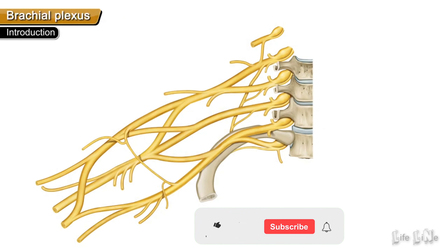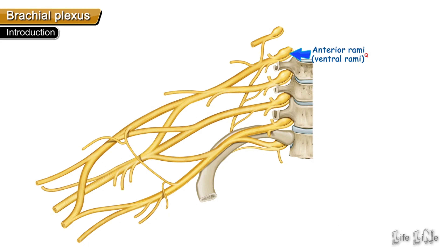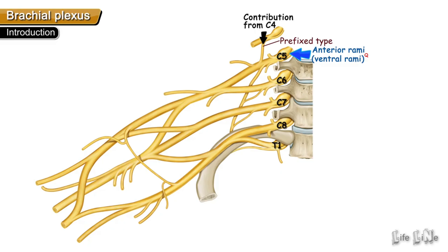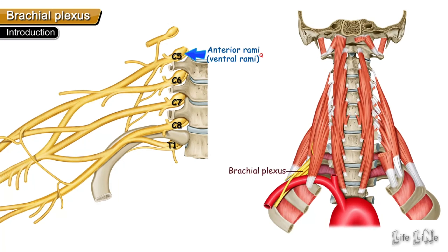The brachial plexus is a network of nerves that supplies the upper limb. It is formed by the anterior rami or ventral rami of spinal segments C5 to T1. If the C4 nerve root is involved, we call it the prefix type, and if the T2 nerve root is involved, we call it the postfix type. The roots of the brachial plexus emerge between the scalenus anterior and scalenus medius muscles.